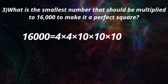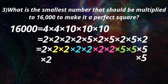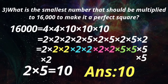16,000 can be written as 4 x 4 x 10 x 10 x 10, where 4 is 2 x 2 and 10 is 2 x 5. We should prime factorize 16,000 and arrange it to make sets of 2 equal numbers. Here, we are left with a single 2 and a single 5. If we multiply by 2 and 5, we get a pair each. To make 16,000 a perfect square, we multiply it by 2 x 5 equal to 10.